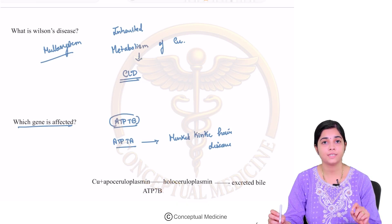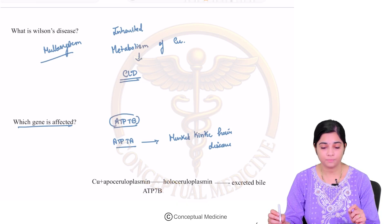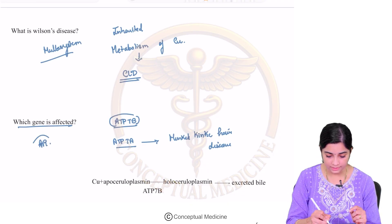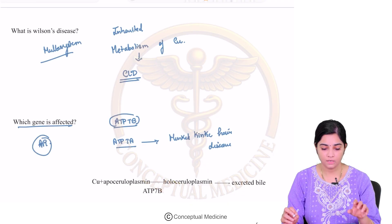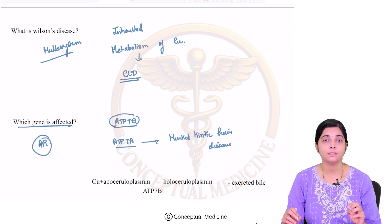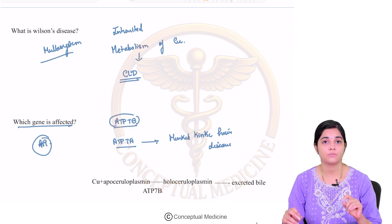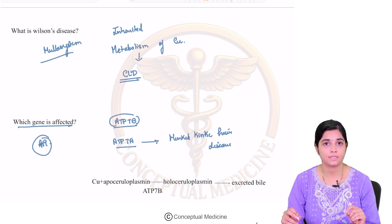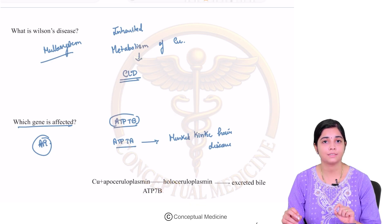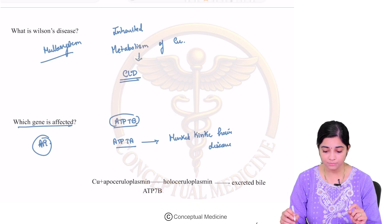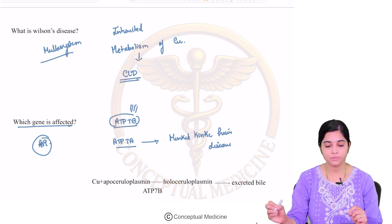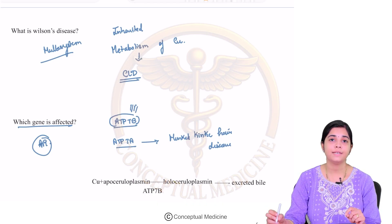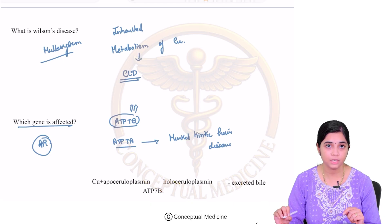So how is this gene defect obtained? This is inherited in an autosomal recessive pattern, where there is a deficiency or problem with the ATP-7B gene.